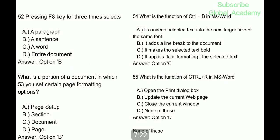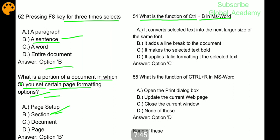Pressing F8 key three times selects a sentence, option B. What is the portion of document in which you set certain page formatting options? Section. What is the function of Control B in MS Word? It adds a line break to the document, B part.